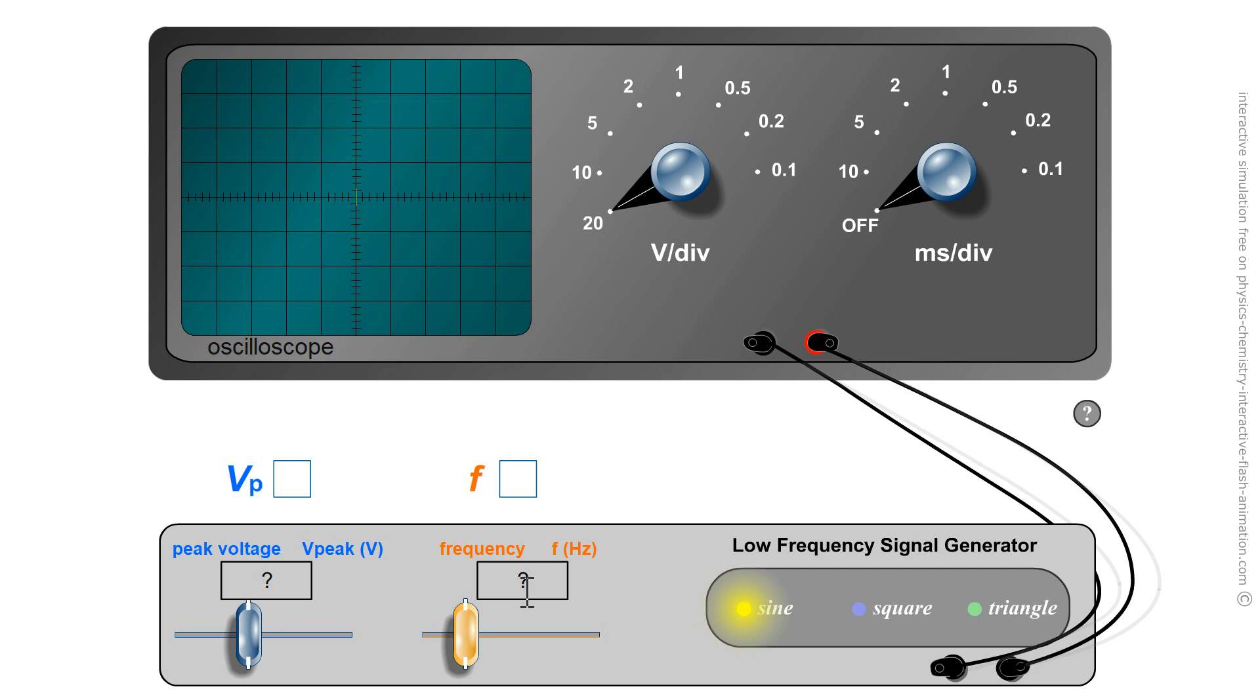The oscilloscope is not going to give us access to the frequency directly. But we can measure the period and calculate the frequency afterwards.